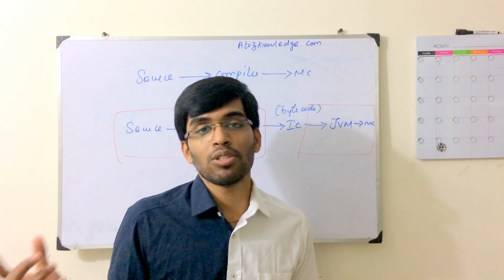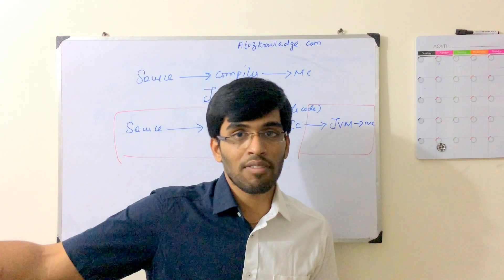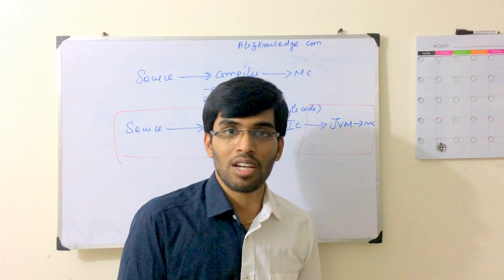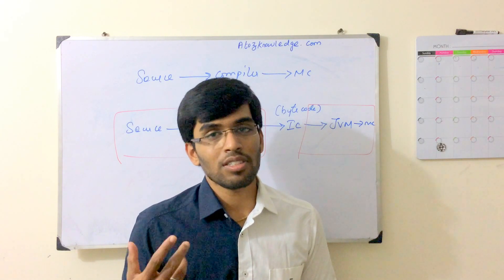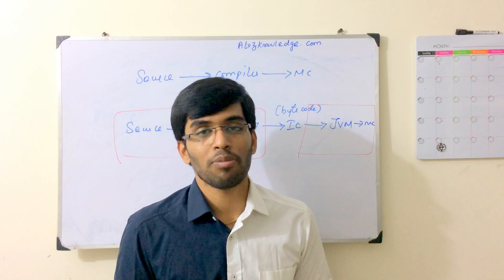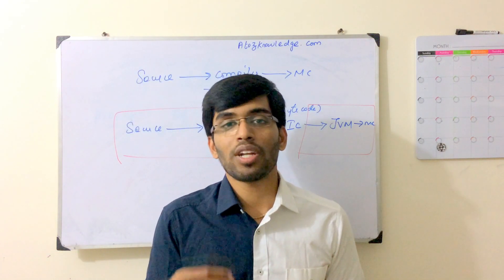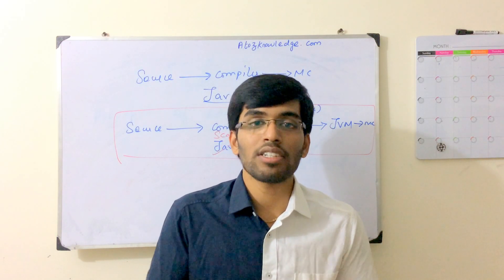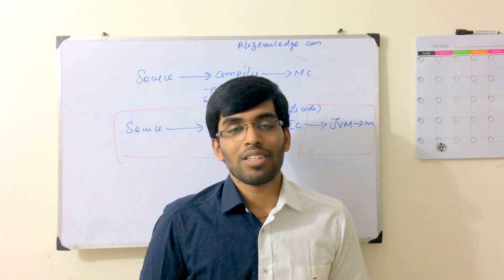I've heard from people saying that even after converting their Java code to Scala, they get the same performance. When you look at their code, Java had 40 lines and Scala had 38 or 39 — almost the same. They know how to write code in Scala, but they don't know how to use brevity. You need to know more syntaxes, functions, and shortcuts. This is a common question people ask, and it's important to understand how Scala boosts performance before entering into it.